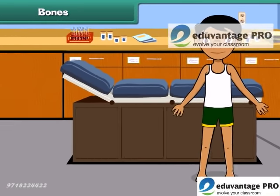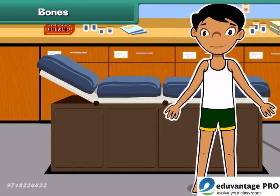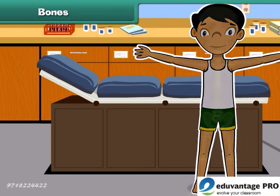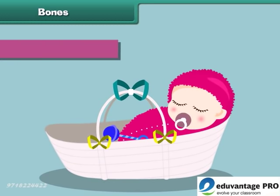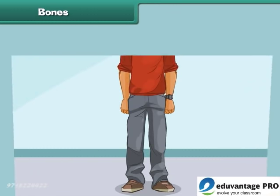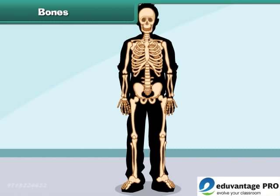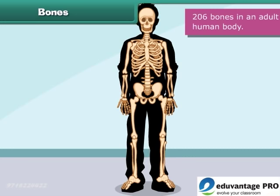Every single person has a skeleton made up of many bones. These bones give your body a structure. At birth, a newborn baby has about 300 bones, whereas an adult human body contains approximately 206 bones.